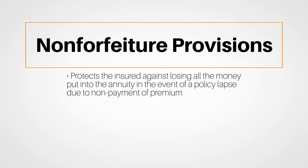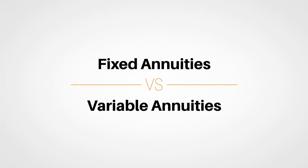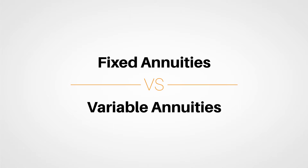The last section of the lesson starts with the various settlement options available when an annuitant decides to begin receiving payments from the annuity. Study these areas diligently, as they are basically the same for life insurance settlement options and both will be on the state exam. We'll then continue with an exploration of fixed versus variable annuities, and there are substantial differences between the two.